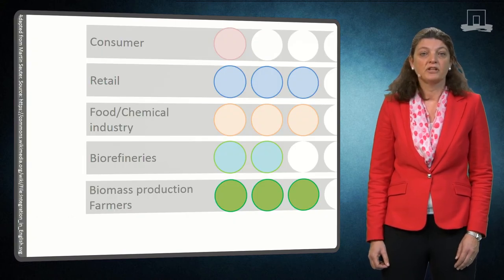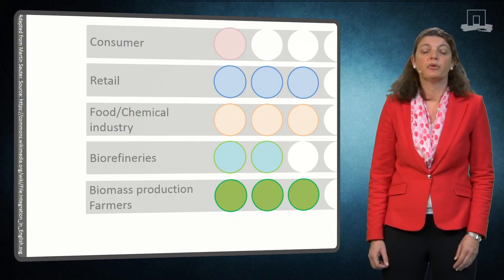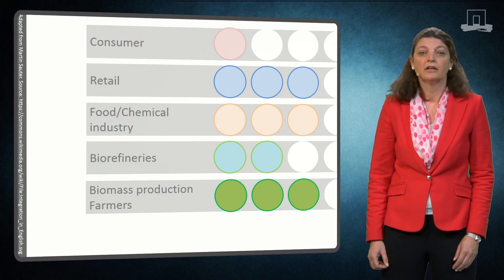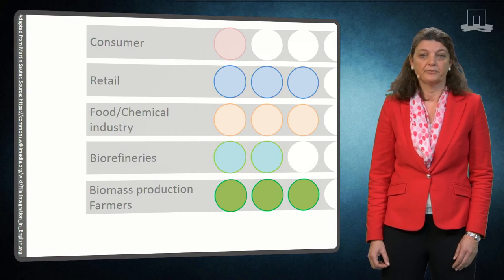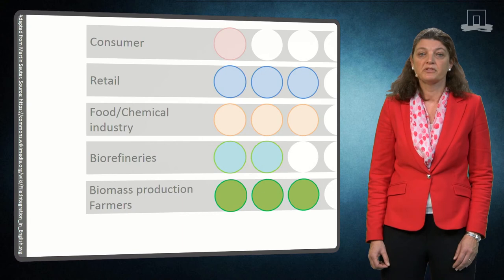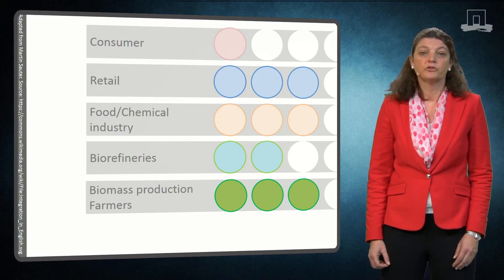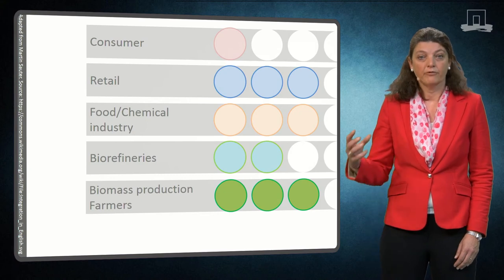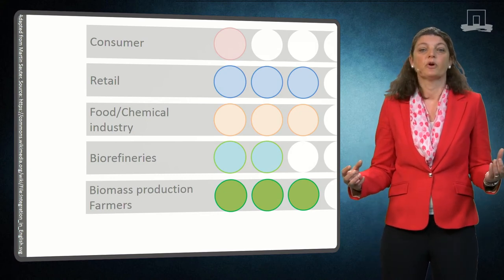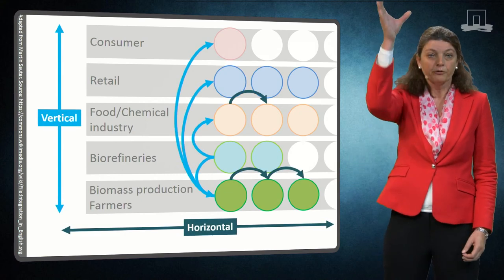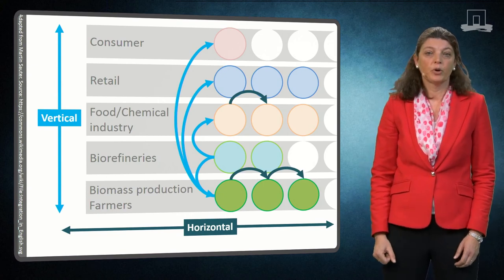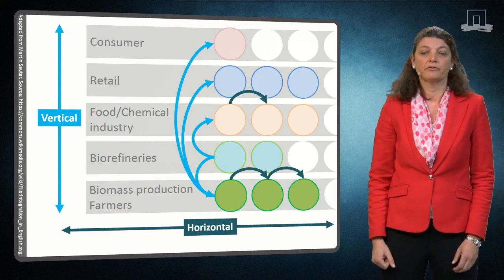Overcoming the challenges and improving the efficiency of the biobased supply chain can be achieved through closer collaboration of involved actors. This implies the establishment of long-term relationships in which firms work together in order to improve the joint economic, environmental or social performance.